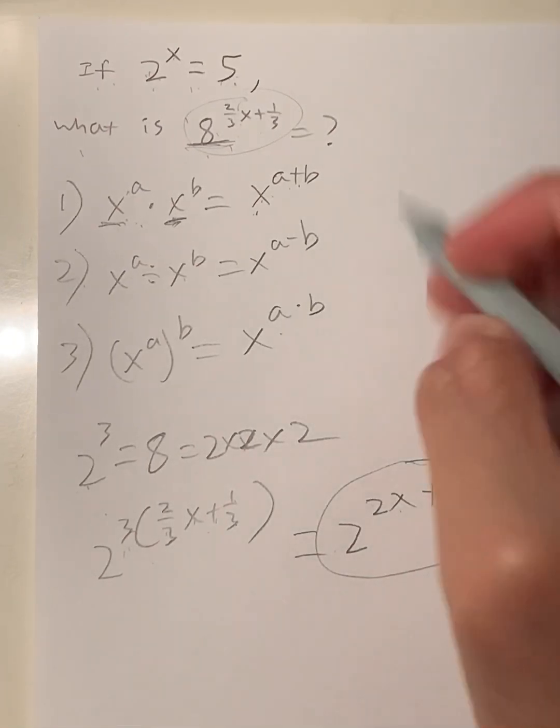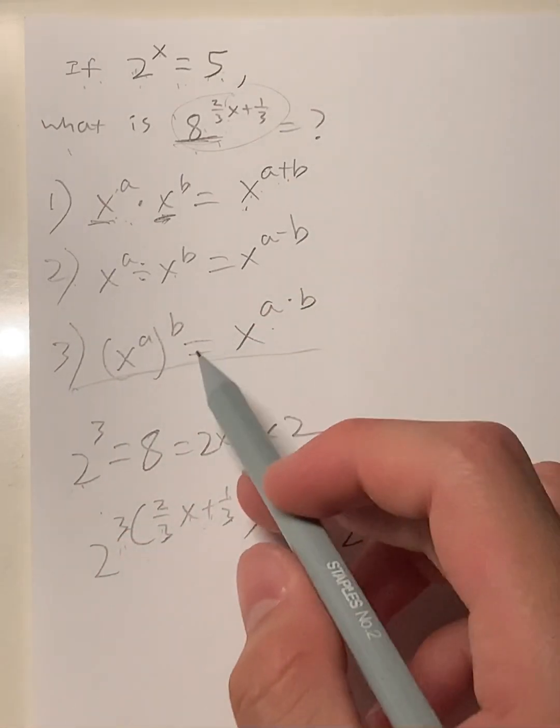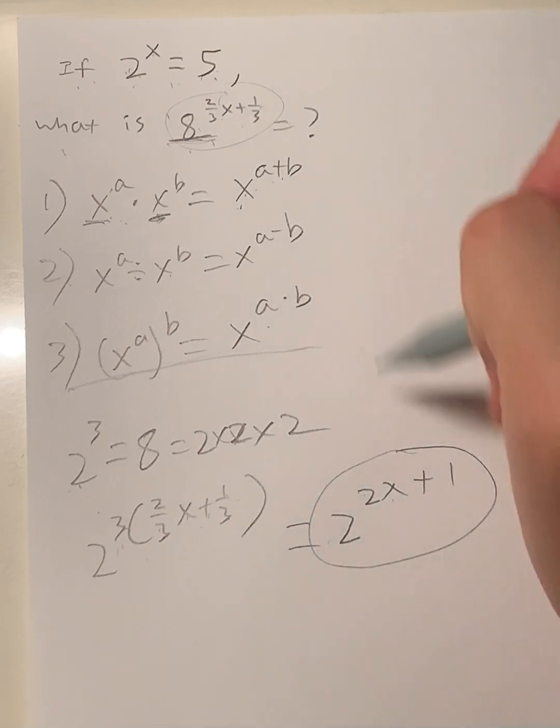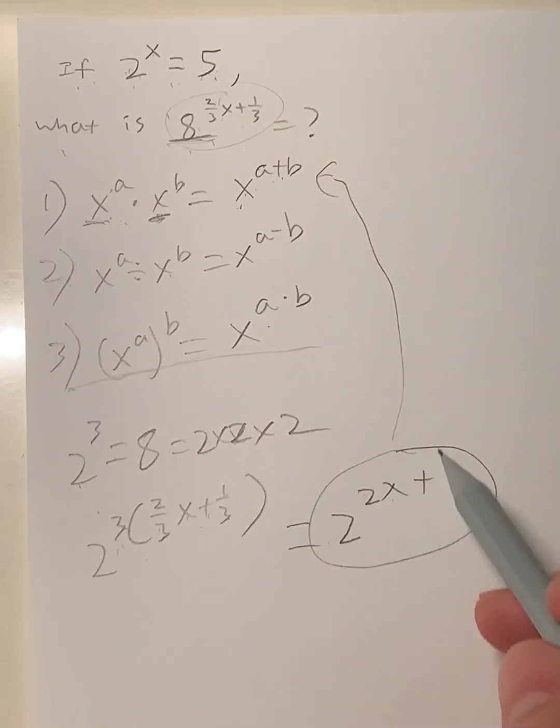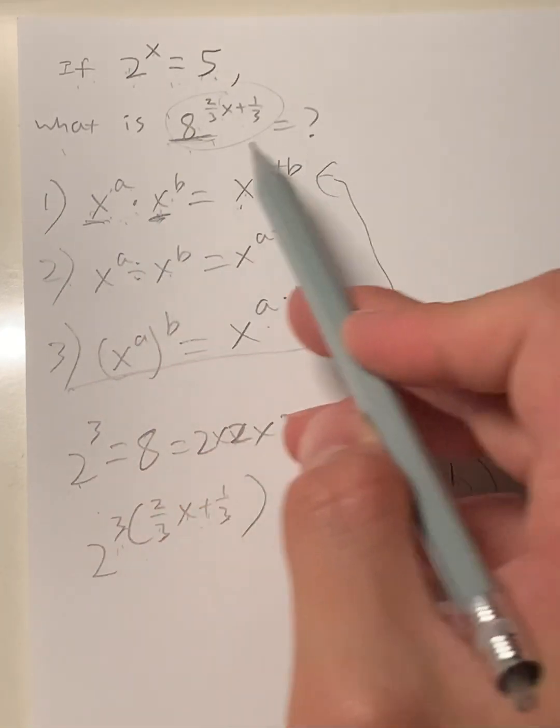Now let's rewrite this using our third rule. Actually, this isn't the third rule. What rule do you think this is? We're going to rewrite it using the first rule. So instead of going from x^a times x^b, we're going to go backwards.